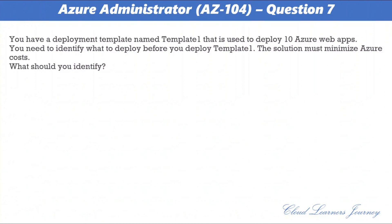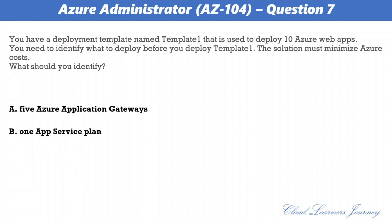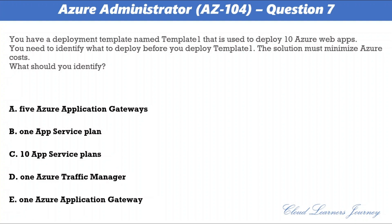Question number 7. You have a deployment template named Template1 that is used to deploy 10 Azure web apps. You need to identify what to deploy before you deploy Template1. The solution must minimize Azure costs. The options are: a) 5 Azure application gateways, b) 1 app service plan, c) 10 app service plans, d) one Azure Traffic Manager, e) one Azure application gateway. The correct option is one app service plan. You create Azure web apps in an app service plan, and one app service plan supports up to 10 web apps.